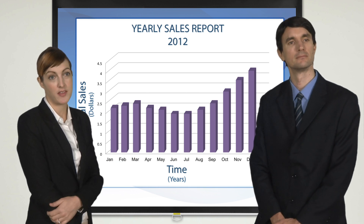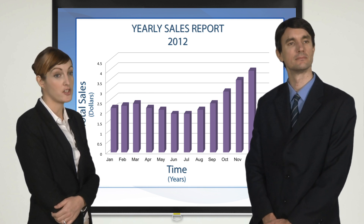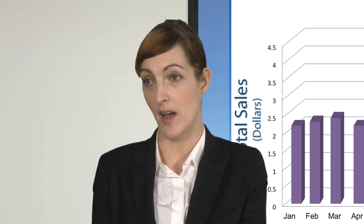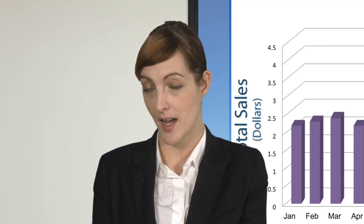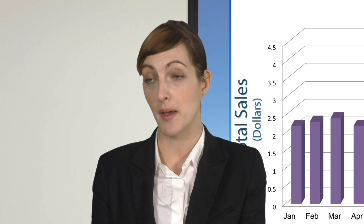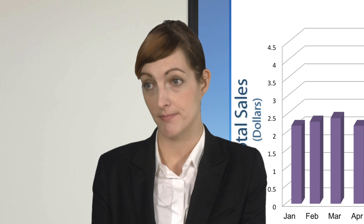In this sales graph, the vertical axis shows the total sales in dollar amounts. The horizontal axis at the bottom of the graph represents the time, and it shows the year in a month-by-month format.